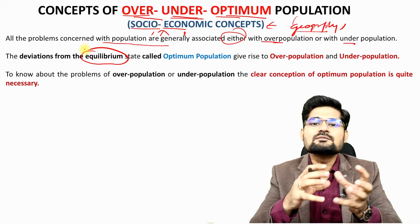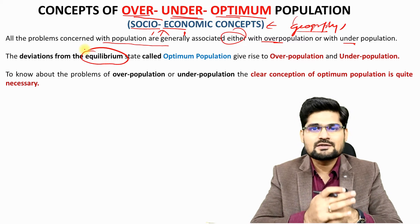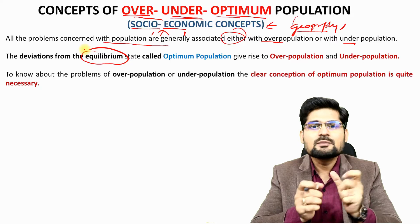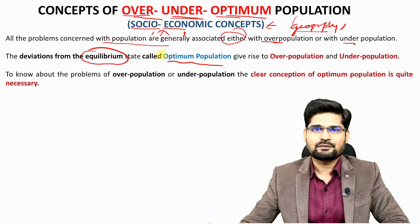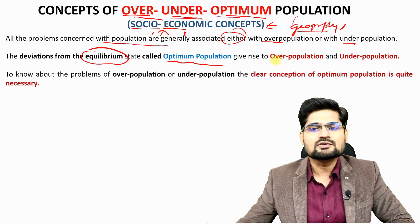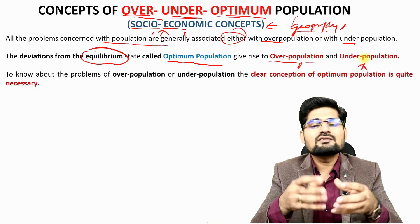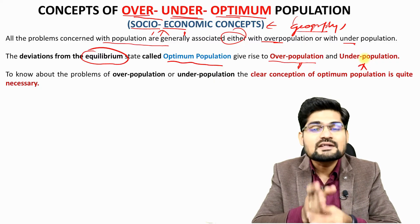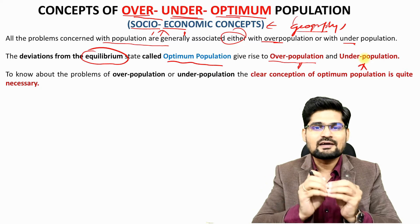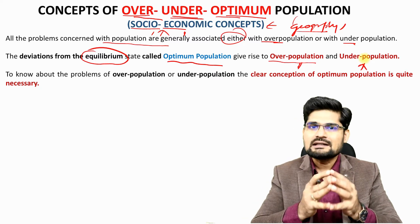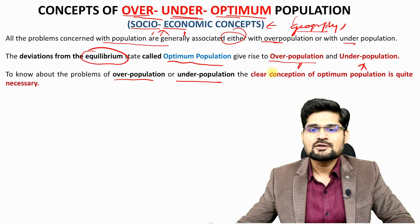When we talk about balance in human systems, population is one parameter where we need to understand this equilibrium — the balance between higher and lower. This equilibrium position is called optimum population, which gives rise to the concepts of overpopulation and underpopulation. Optimum population is the reference frame: moving one side gives overpopulation, and moving the other gives underpopulation.